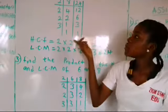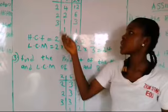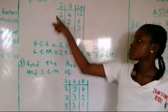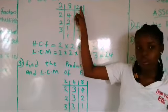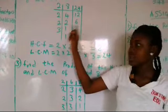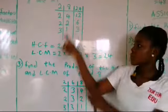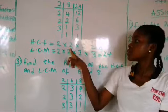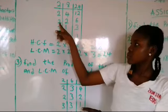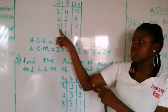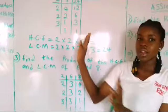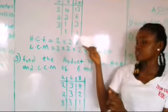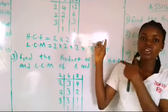To look for the HCF, we look for the numbers among these that divide both of them at once. The first 2 divided both of them — write out 2. The second 2 divided both of them — write out 2. The third 2 also divided both of them — write out 2. But the 3 divided only one of them, so we will not write 3. Our HCF is 2 times 2 times 2, which gives us 8.